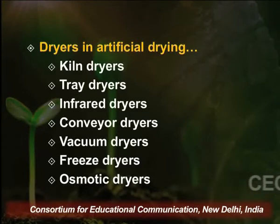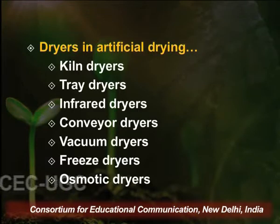Kiln dryers are a two-storey small structural unit where the drugs are kept at the first floor level and heat is provided at the ground floor level. Since warm air is lighter it moves upward, passing through the drug lying in perforated trays on the first floor. This hot air passes through the drug, taking all the moisture away, and ventilates from the top. This is how kiln dryers work.